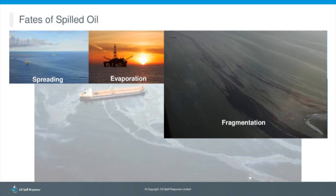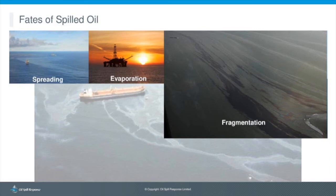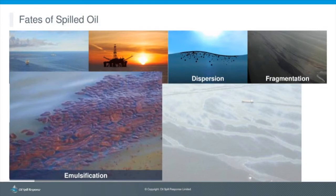Fragmentation is the process where one initial slick breaks up into multiple smaller slicks, driven by wind and oceanic currents. After 24–48 hours, what was one large slick could become two, three, or four smaller slicks spread across a significant area. With limited resources, aerial surveillance — a helicopter or airplane — is used to direct response vessels toward the largest slick or heaviest contamination.